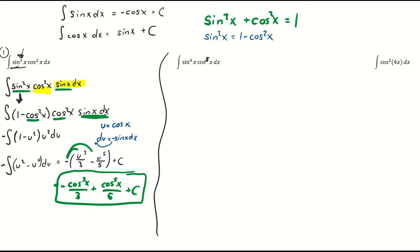Now let's take a look at the second problem: sine to the fourth x times cosine to the fifth x dx. When we have a sine and cosine in the integral, look at whichever one is odd and peel off a power. So I'm left with cosine to the fourth x times cosine x dx. We save that cosine x dx for our du, which means u is going to be sine — the derivative of sine is cosine.